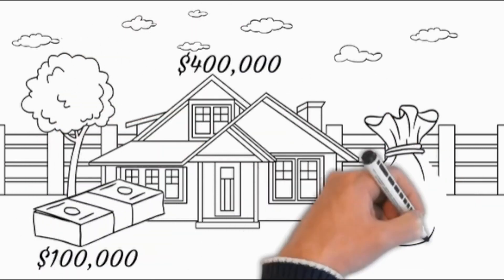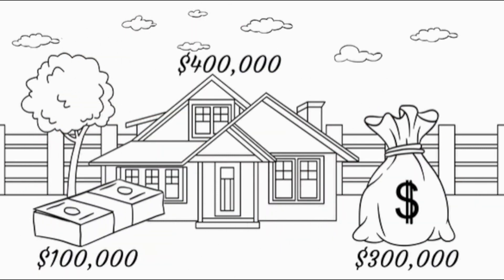You would have financed $300,000 of the purchase price. If your home appreciates by 5% and your mortgage interest rate is 3%, you're experiencing leveraged growth based on interest rate arbitrage.